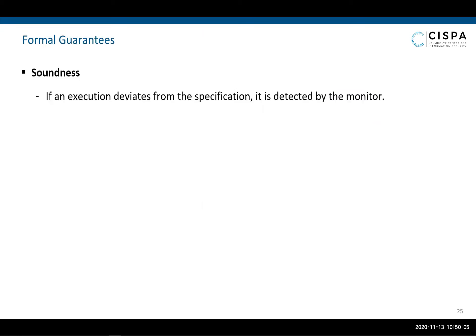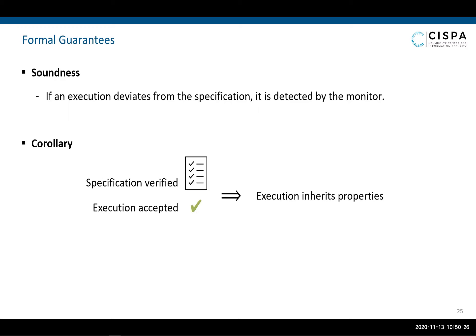The key property we want to prove for our runtime monitor is soundness. Intuitively, soundness guarantees that each concrete trace accepted by the monitor corresponds to a possible symbolic trace generated by the protocol specification. Or in other words, if an execution deviates from the specification, it is recognized by the monitor. Furthermore, soundness allows us to automatically extend the security properties of the specification to the monitored implementation. The protocol specification is shown to satisfy a set of security properties, for example by using Tamarin or Proverif, and when the runtime monitor accepts an execution, the execution inherits those security properties.